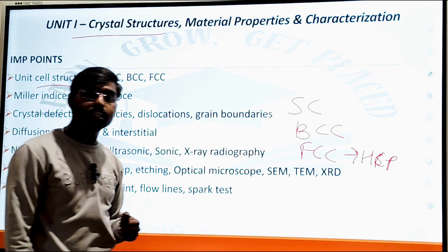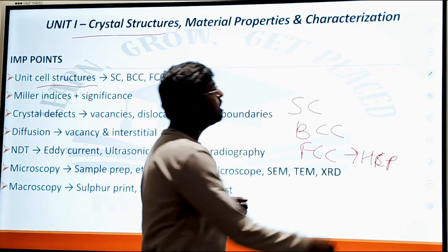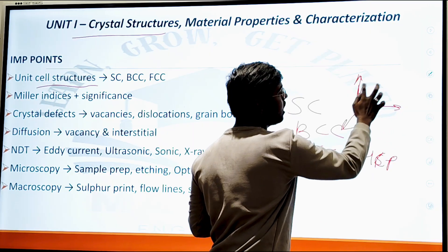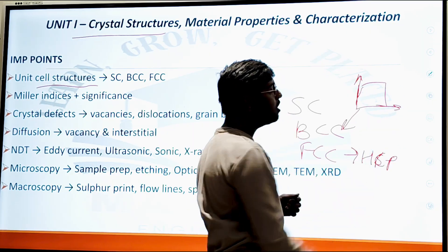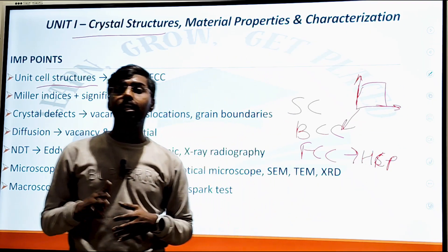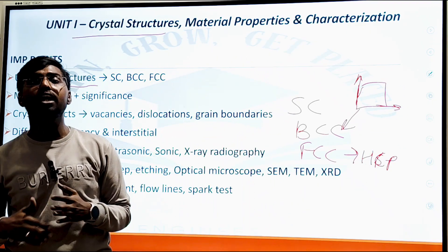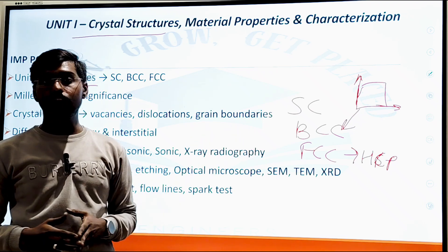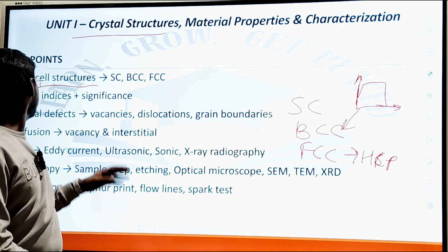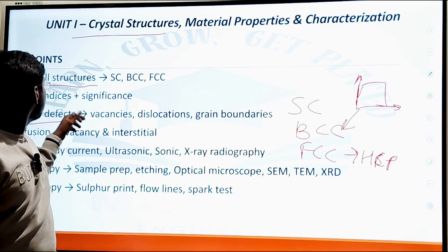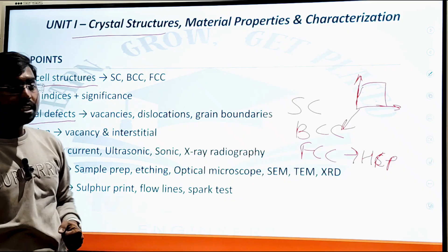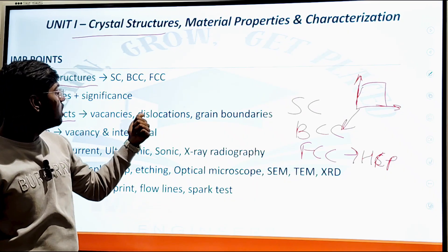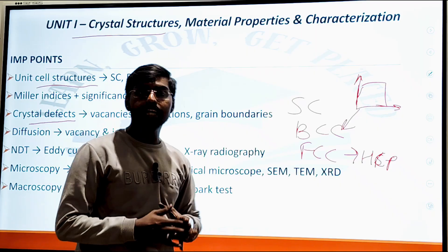The second topic is Miller Indices. In Miller Indices questions, a diagram is given and you need to find out and determine the Miller Indices from it. This is a numerical aspect worth seven to eight marks.